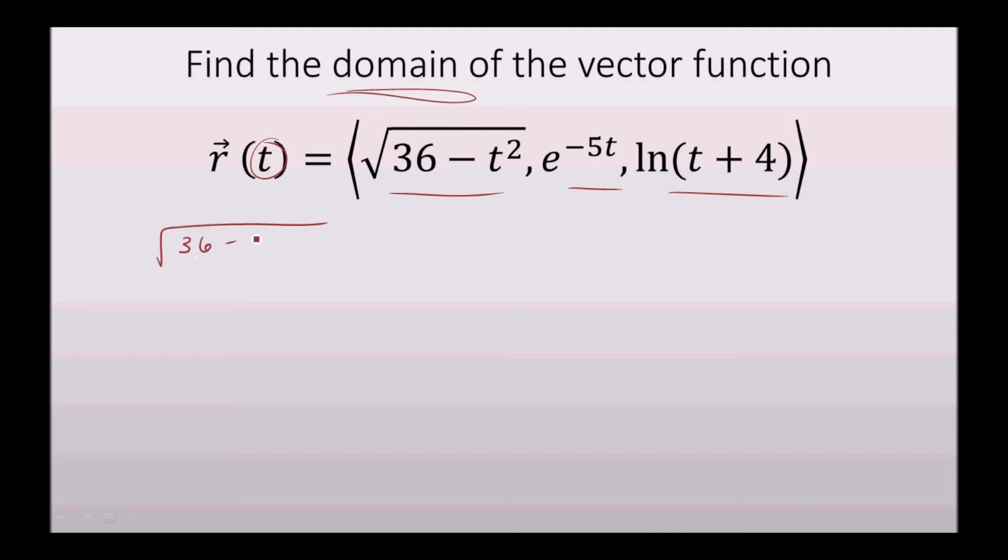So for example, for the square root of 36 minus t squared, we know that the argument here, 36 minus t squared, must be greater than or equal to 0 because we can't have a square root of anything less than 0. Square root of a negative number is imaginary. So 36 minus t squared is greater than or equal to 0, so that means that t is between negative 6 and 6, and also equal to negative 6 and 6, because we can take the square root of 0 but we cannot take the square root of anything less than 0.